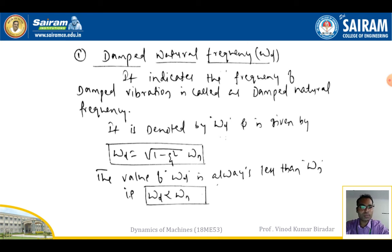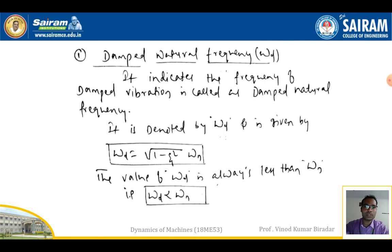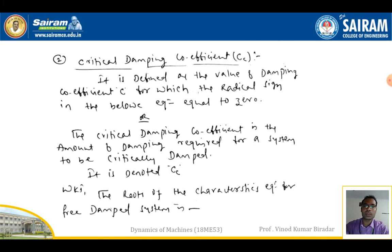Remember, while solving a problem we need to satisfy the condition ωd < ωn, where ωd is the damped natural frequency and ωn is the natural frequency. This concludes the first term. The second term is the critical damping coefficient, normally denoted by Cc.